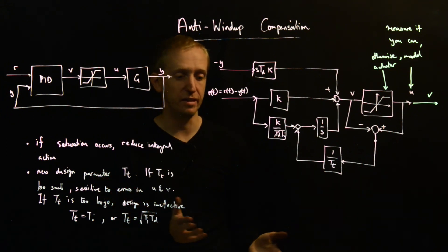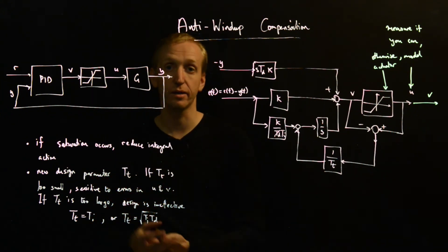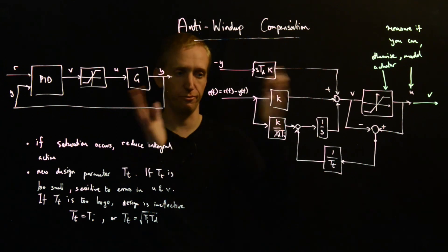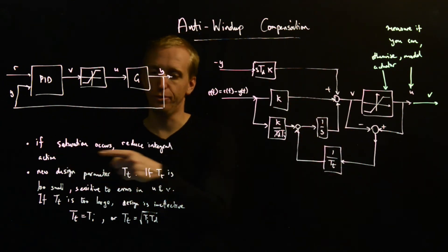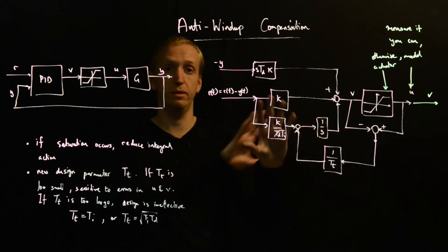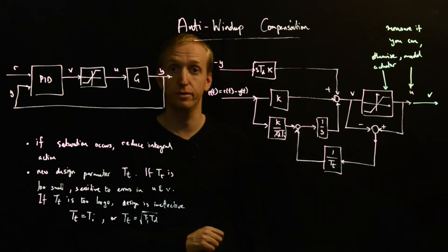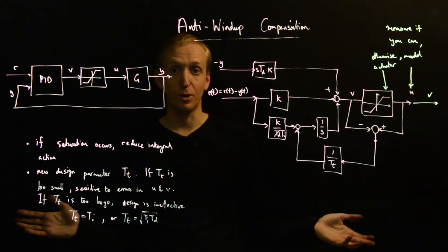And the setting for more general controllers that also have integral action sort of follows the same pattern. This is your underlying philosophy, and you make similar sets of manipulations to unwind your integrator when saturation is occurring. So, and you want that compensation.